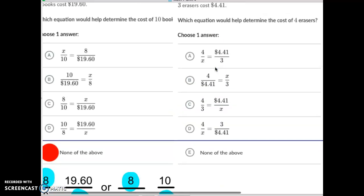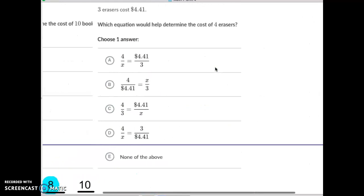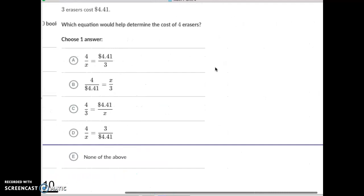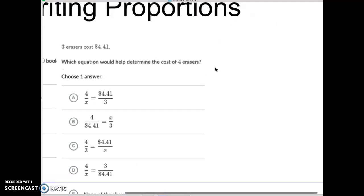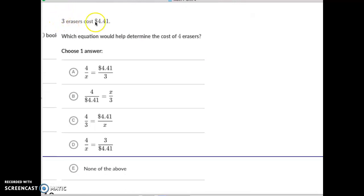Okay, here's this one. Come on over screen. There you go. This one says that 3 erasers cost $4.41. Which equation will help us determine the cost of 4 erasers? Again, 3 is our key. That goes with both $4.41 and 3 goes with 4. So 3 has to be in the opposite corner of the X variable.